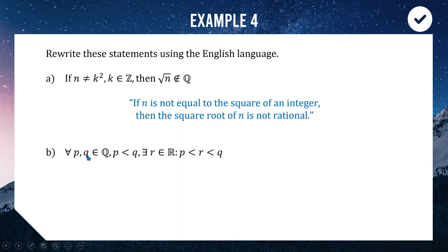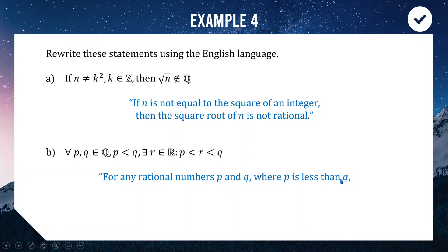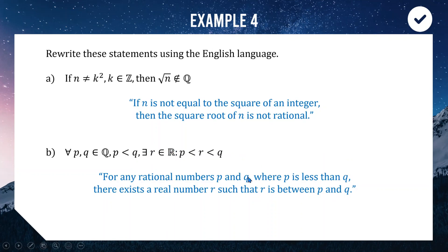Example B: 'For all P and Q elements of ℚ where P is less than Q, there exists R element of ℝ such that P < R < Q.' In English: 'For any rational numbers P and Q where P is less than Q, there exists a real number R between them.' This is saying that between any two fractions, you can always find a real number — the gaps between rational numbers are filled by irrational numbers.